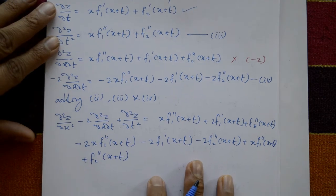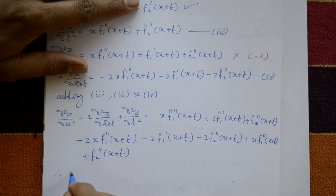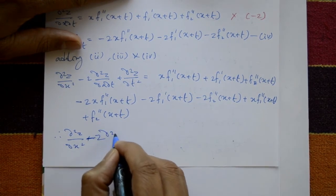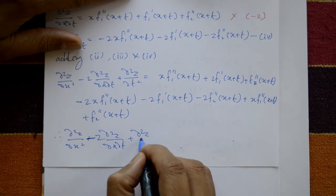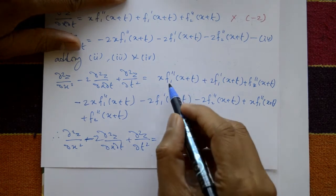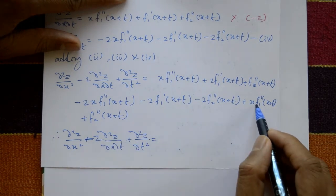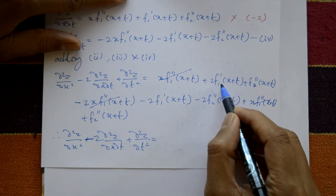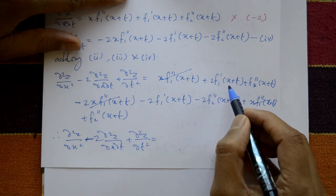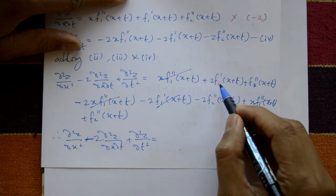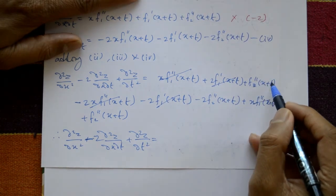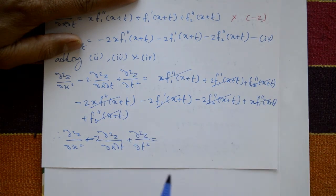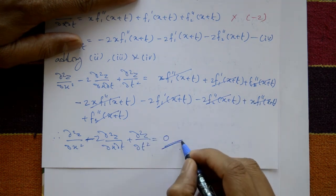Therefore, ∂²z/∂x² minus 2·∂²z/∂x∂t plus ∂²z/∂t² equals: the x·f1'' terms cancel (plus x, minus 2x, plus x), the 2·f1' and minus 2·f1' terms cancel, and the f2'' terms (plus 1, minus 2, plus 1) also cancel. All terms cancel out, giving zero. This is the required PDE, hence proved.